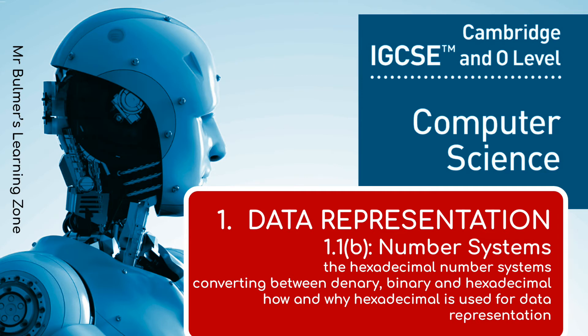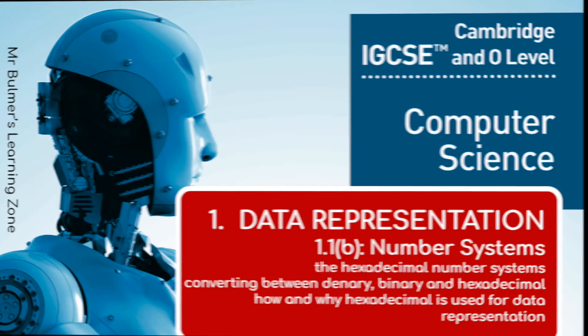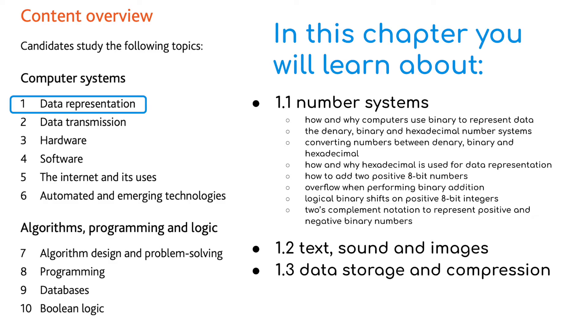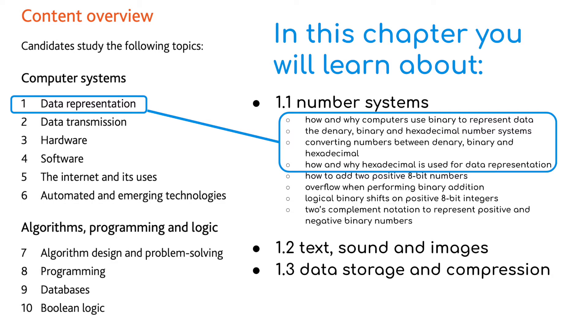Welcome back to the second video looking at IGCSE Computer Science for the Cambridge exam board. We're going to look at topic 1, which is data representation. In this video we're going to be looking at the hexadecimal number system, converting between denary and binary, and also looking at what is the point and why we use hexadecimal.